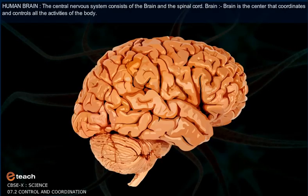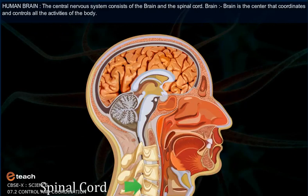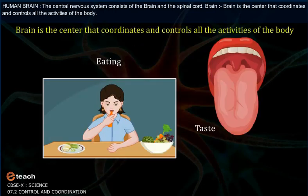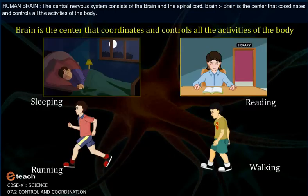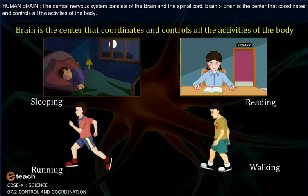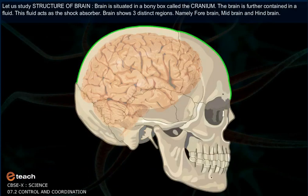The central nervous system consists of the brain and the spinal cord. The brain is the center that coordinates and controls all the activities of the body. Let us study the structure of the brain.